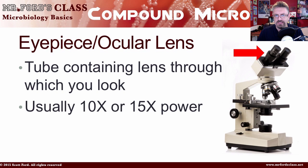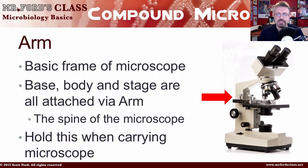The first component is the eyepiece, or ocular lens. This is the tube containing the lens through which you look into the microscope. The lens is usually 10x magnification, and sometimes 15x. The next component is the arm, which is basically the spine of the microscope — the basic frame. The base, body, and stage are all attached via the arm.